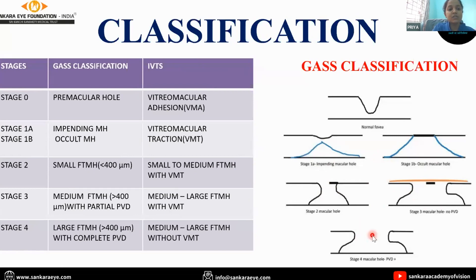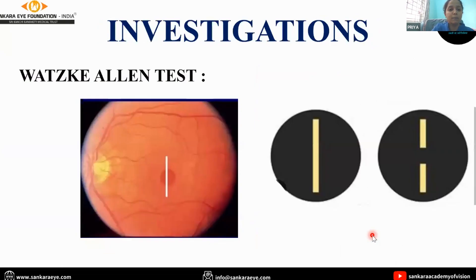In the IVTS classification: stage 0 includes vitreo-macular adhesion, stage 1 includes vitreo-macular traction, stage 2 includes small to medium full-thickness macular hole with vitreo-macular traction, stage 3 includes medium to large full-thickness macular hole with VMT, and stage 4 includes medium to large full-thickness macular hole without VMT.